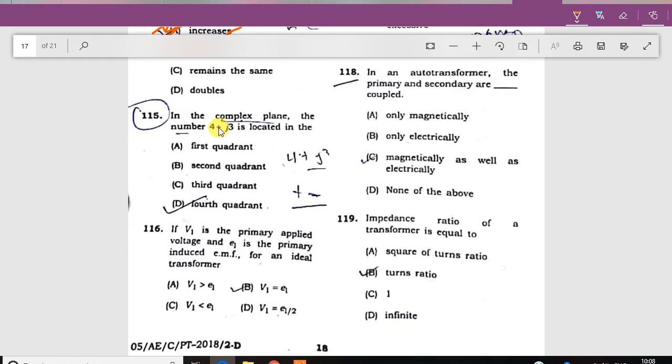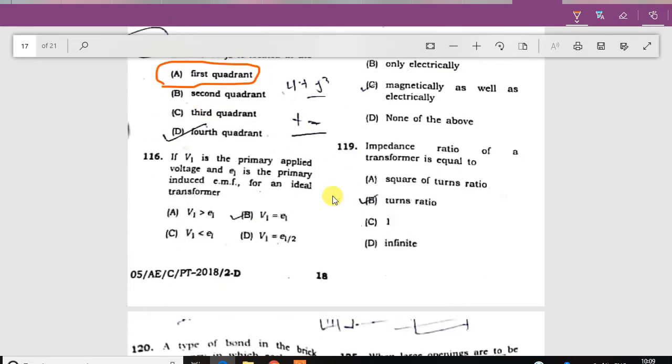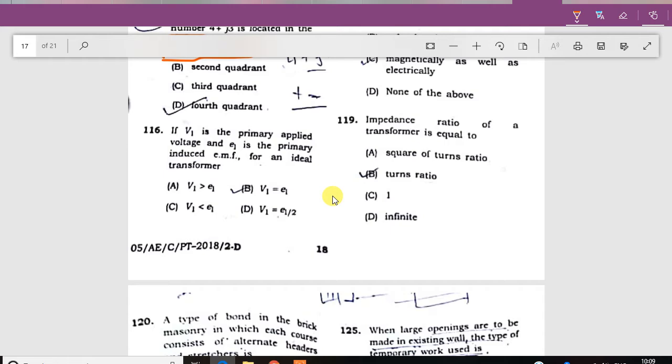The complex plane is located in the first coordinate. If V1 is the primary applied voltage and E1 is the primary induced EMF, then for an ideal transformer, V1 is equal to E1.